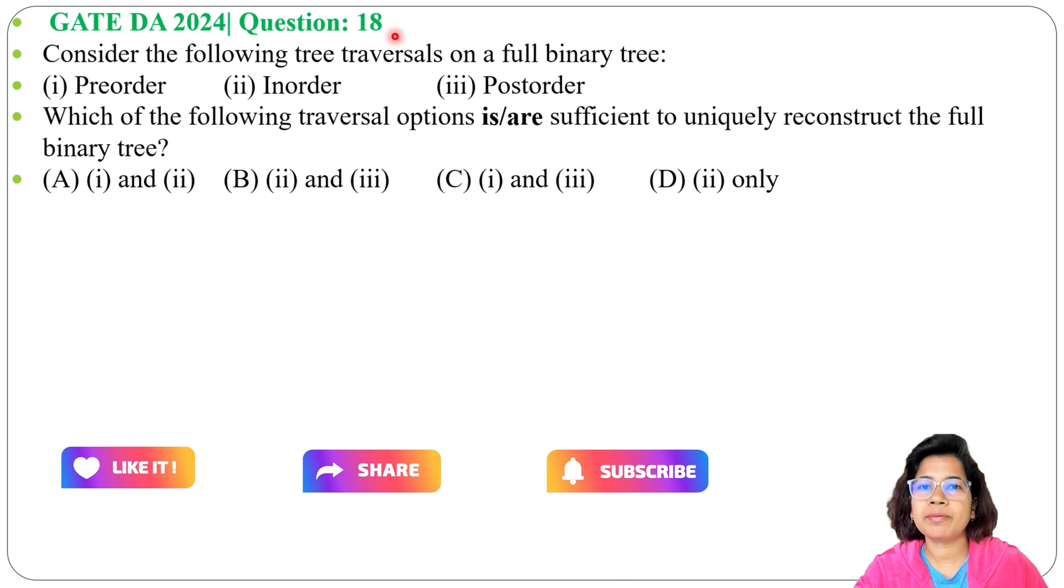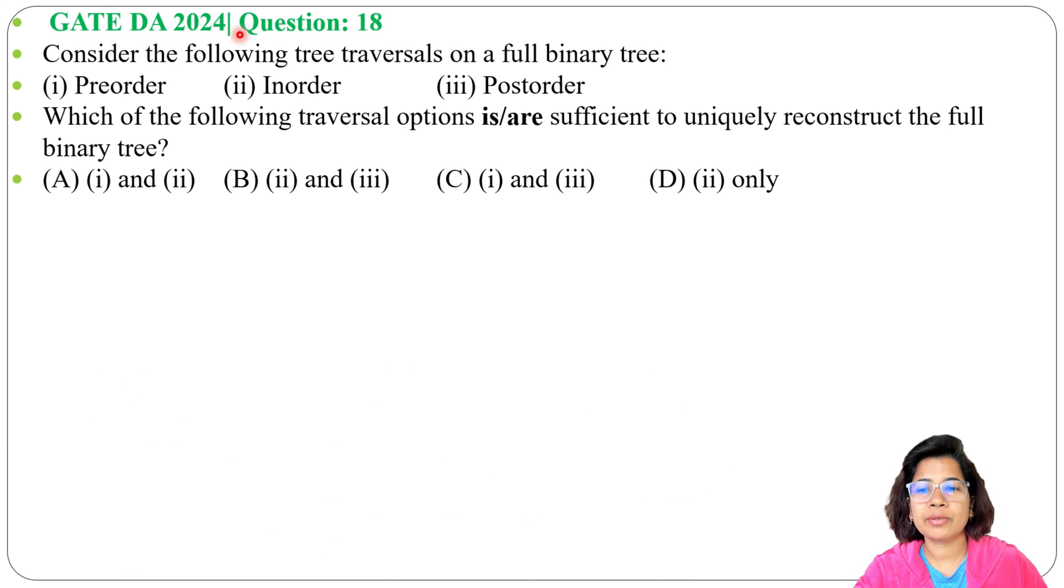Let's solve a previous question on tree traversal. This question was asked in GATE DA 2024, question number 18 excluding general aptitude, and including general aptitude it is question number 28. Consider the following tree traversals on a full binary tree: pre-order,